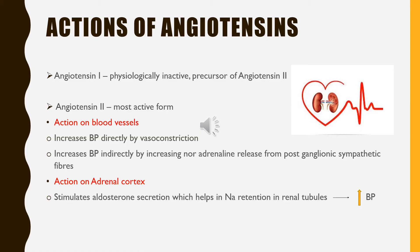Angiotensin 2 is the most important among all angiotensins. All of its actions are aimed at increasing blood volume and blood pressure. Its action on blood vessels: Angiotensin 2 increases arterial blood pressure by directly acting on blood vessels causing vasoconstriction, and indirectly by increasing the secretion of noradrenaline, which is a general vasoconstrictor. Its action on the adrenal cortex: Angiotensin 2 stimulates the secretion of aldosterone from the adrenal cortex, which helps in the retention of sodium in the renal tubules, thereby increasing blood pressure.